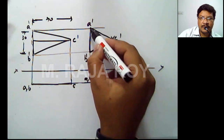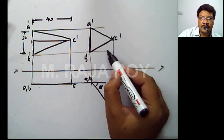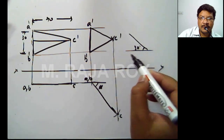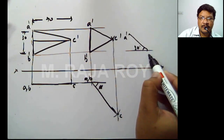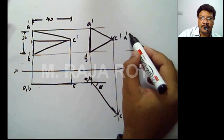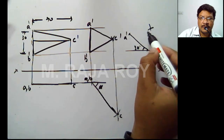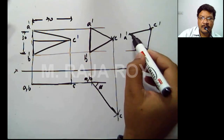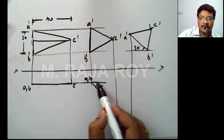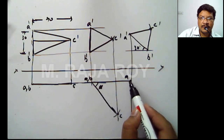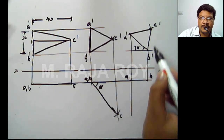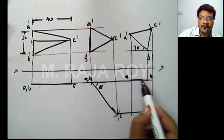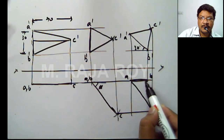In the third stage, the edge A'B' is making an angle of 30 degrees with HP, so draw a 30-degree line. Place A' and B' on this line, reconstruct the triangle: from A' draw an arc of 30, from B' draw an arc of 30, and where they intersect you get C'. After reconstructing, draw projectors down. Draw the locus line — this gives point A, extend to get point B. Draw the projector from C' and the locus line from C to get point C. Connecting A, B, C gives the final top view.